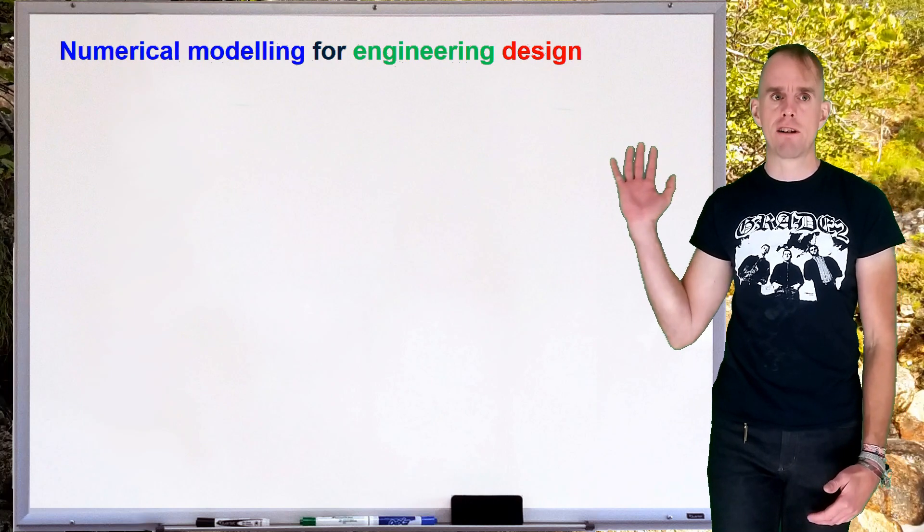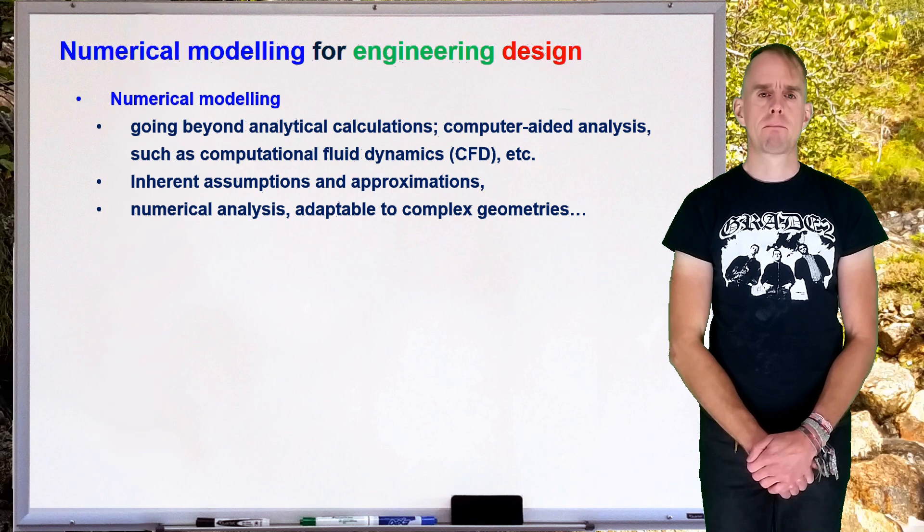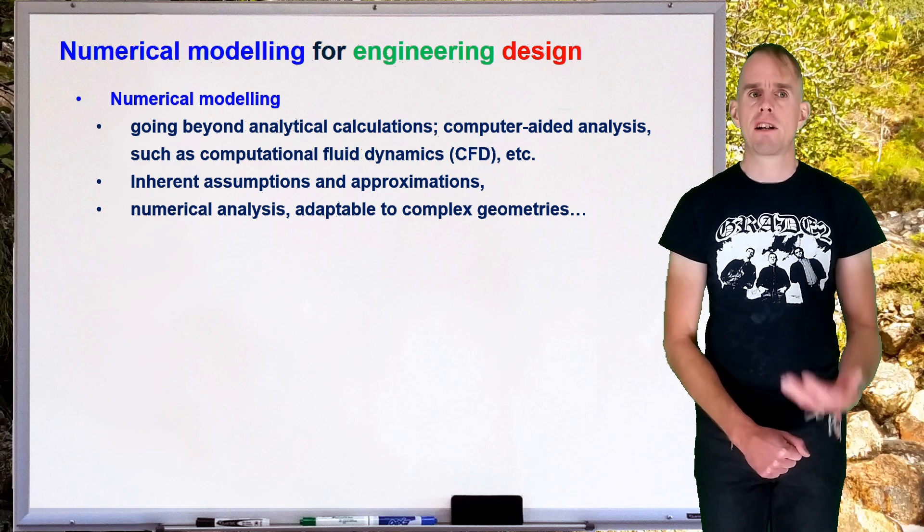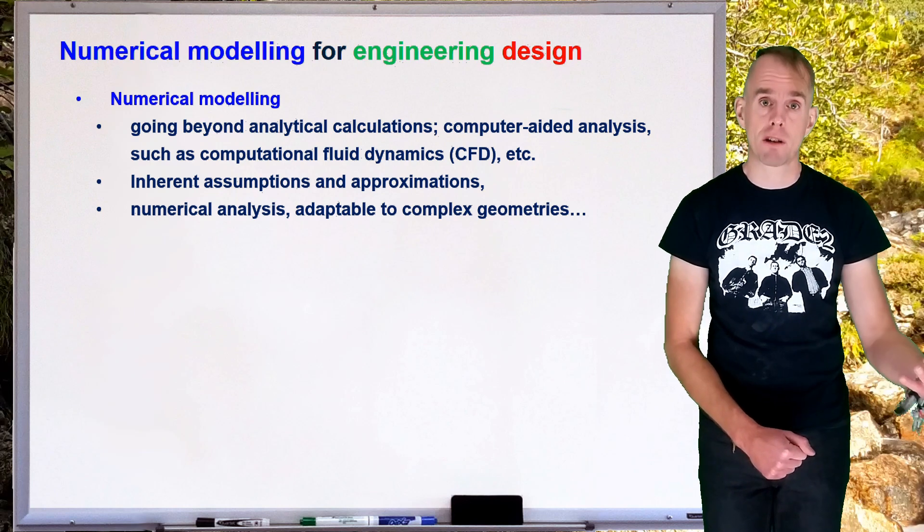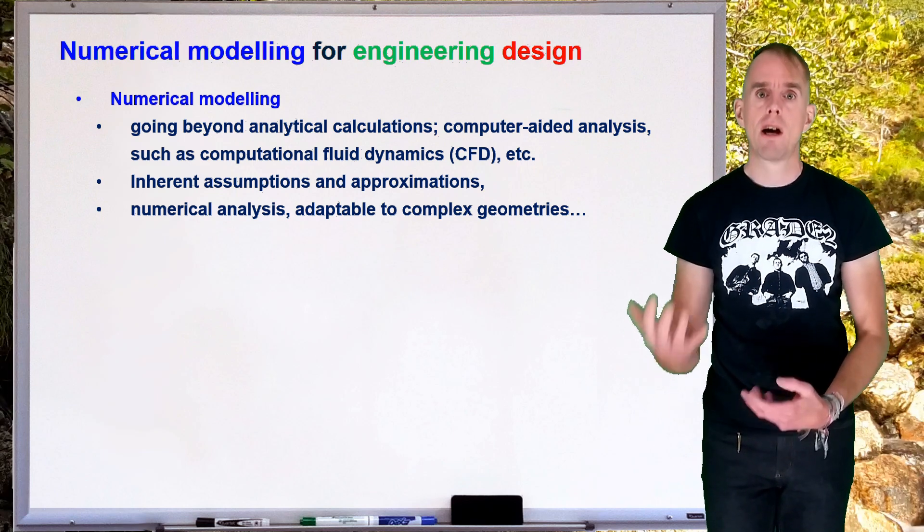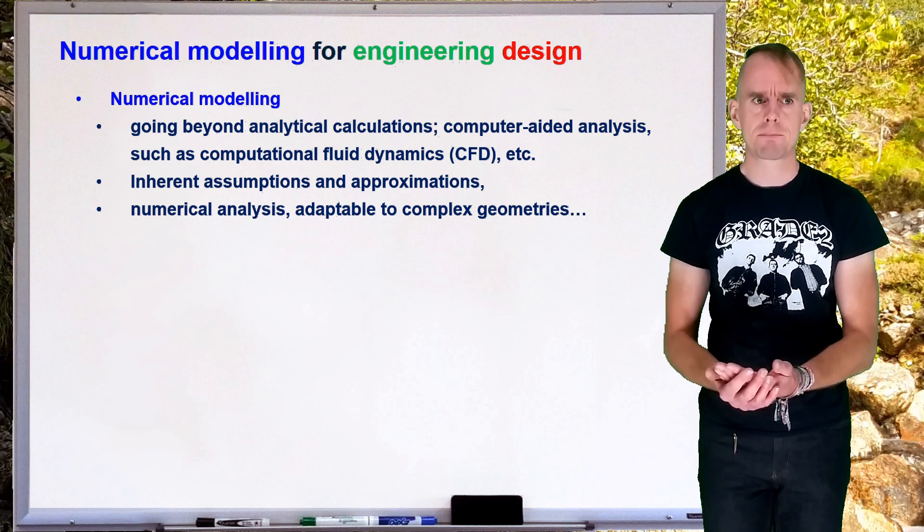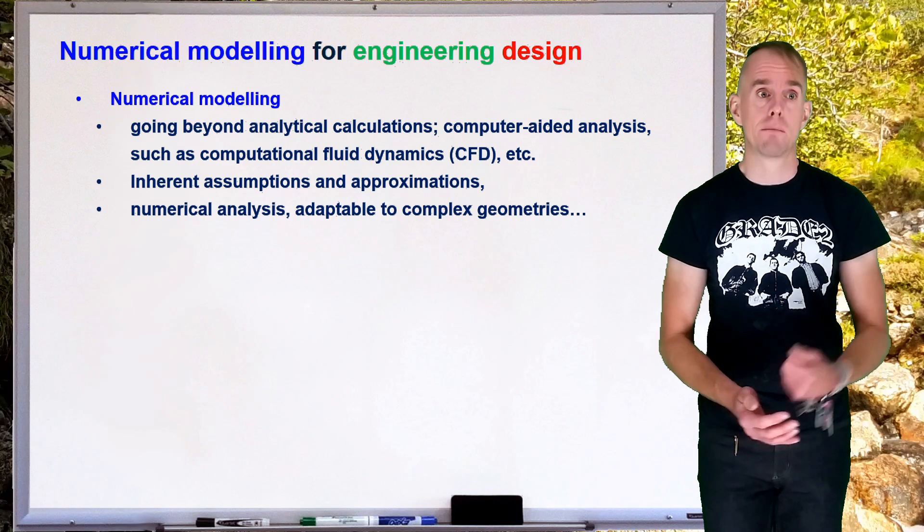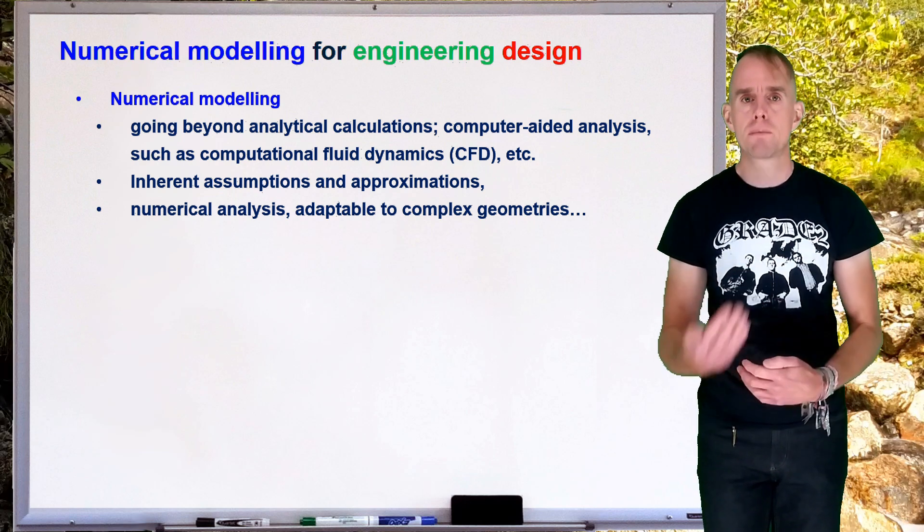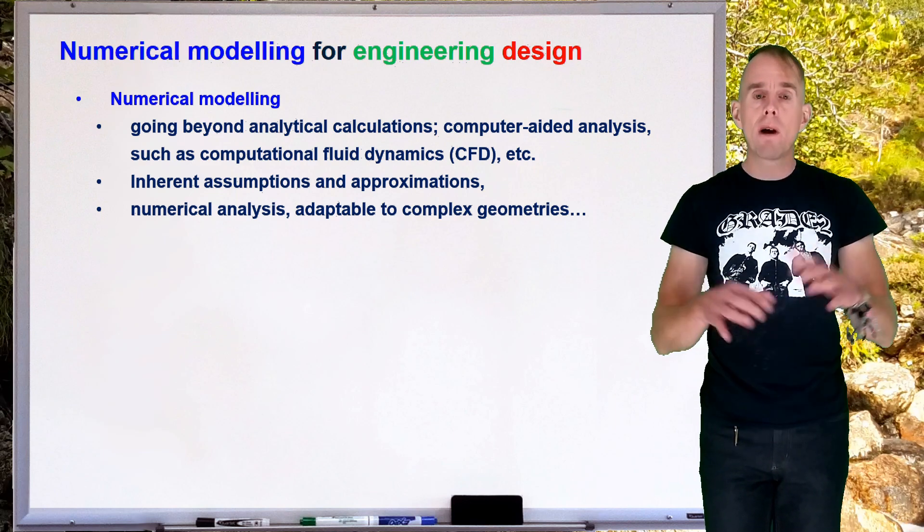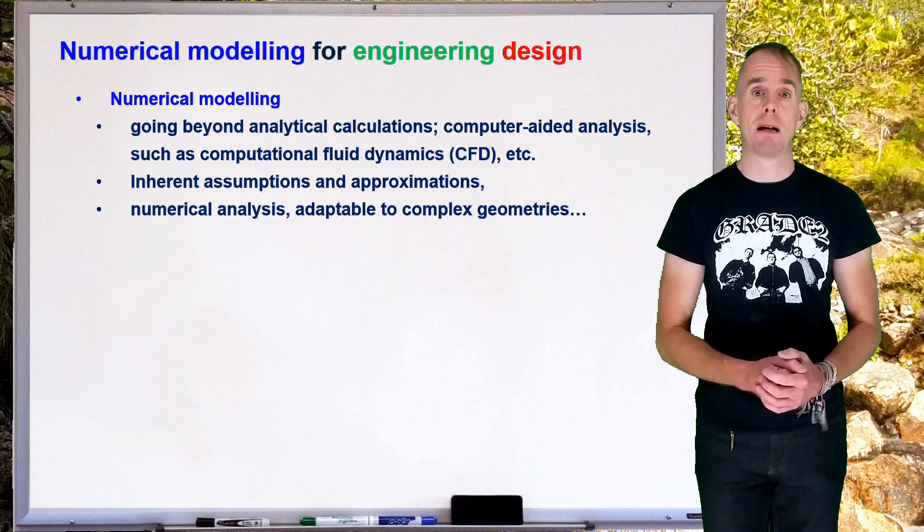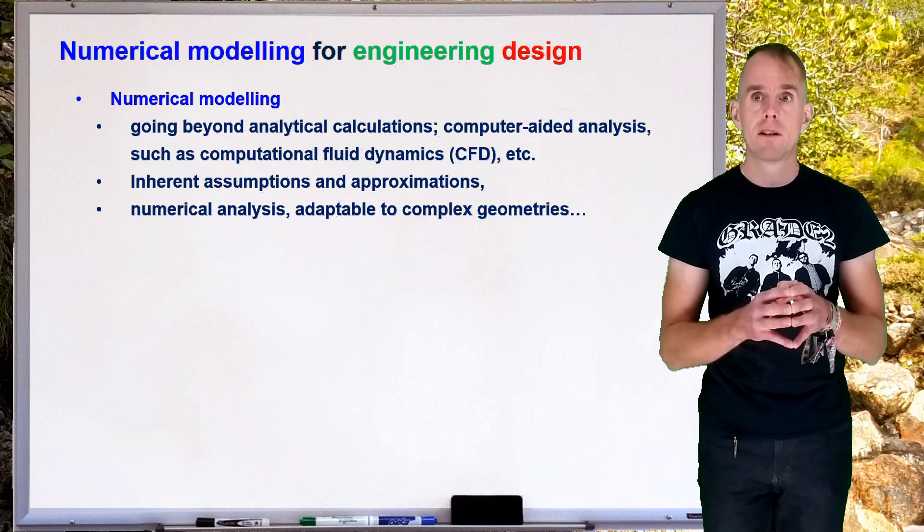So here we go, numerical modelling for engineering design. Let's consider the numerical modelling component. Now numerical modelling means that we're going beyond simple hand calculations, simple analytical calculations. We're using computer aided analysis. We might be using a pre-built computational fluid dynamics code as you will be for example on this course. Or you may also be writing your own codes. Now in any numerical model as with any analytical model there are going to be inherent assumptions and approximations and we need to understand the effect of those assumptions and those approximations on the results that the model gives us. Your engineering model is not a perfect facsimile of real world reality. It is a facsimile, i.e. there are assumptions and approximations and it's very important to understand exactly what those are.